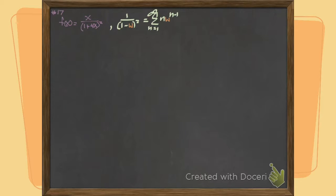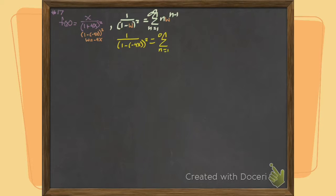Now we're going to go like last time, and we're going to make a u-sub. What's our u? Down there in the denominator, it looks like our u is minus 4x. I'm going to go and stick it in everywhere I saw a u — that was our u-step. Then we're going to clean it up.